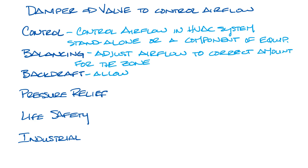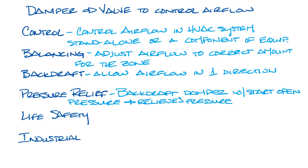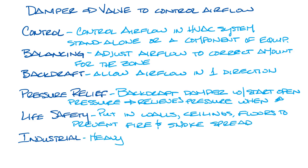Backdraft dampers allow airflow in only one direction to prevent backdraft. Pressure relief dampers are backdraft dampers that have a set-open pressure so that if the pressure exceeds that predetermined point, the damper will open and allow the pressure to be relieved. Life safety dampers are put in openings in walls, ceilings, and floors to prevent the spread of smoke and fire. Industrial dampers are heavy-duty dampers used in severe conditions, such as applications like tunnels and blast situations.